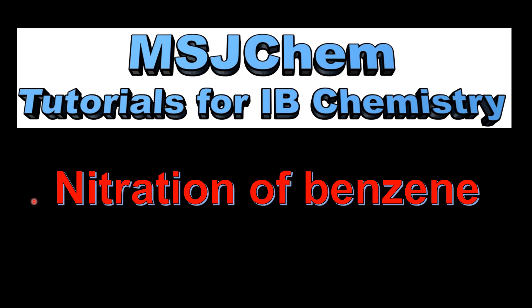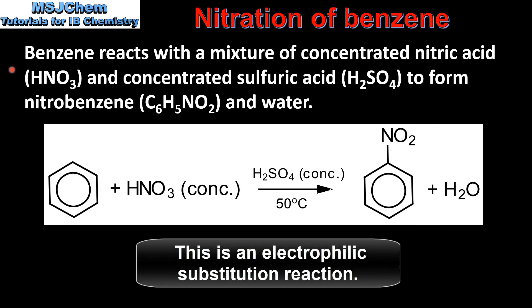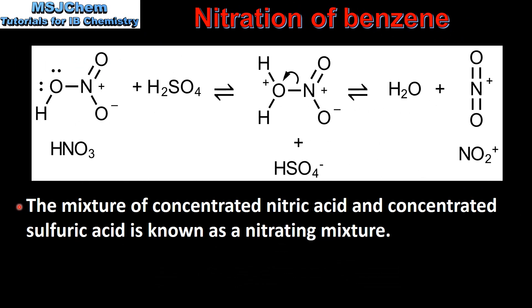This is MSJChem. In this video I'll be looking at the nitration of benzene. Benzene reacts with a mixture of concentrated nitric acid and concentrated sulfuric acid to form nitrobenzene and water. Benzene reacts with concentrated nitric acid in the presence of a sulfuric acid catalyst and a temperature of 50 degrees to form nitrobenzene and water. The mixture of concentrated nitric acid and concentrated sulfuric acid is known as a nitrating mixture.